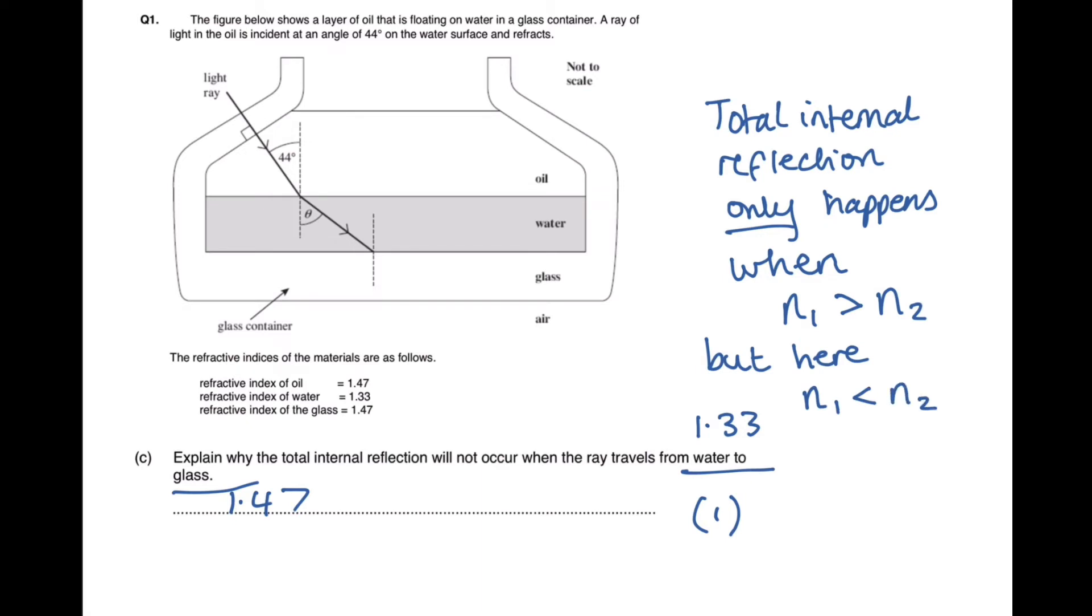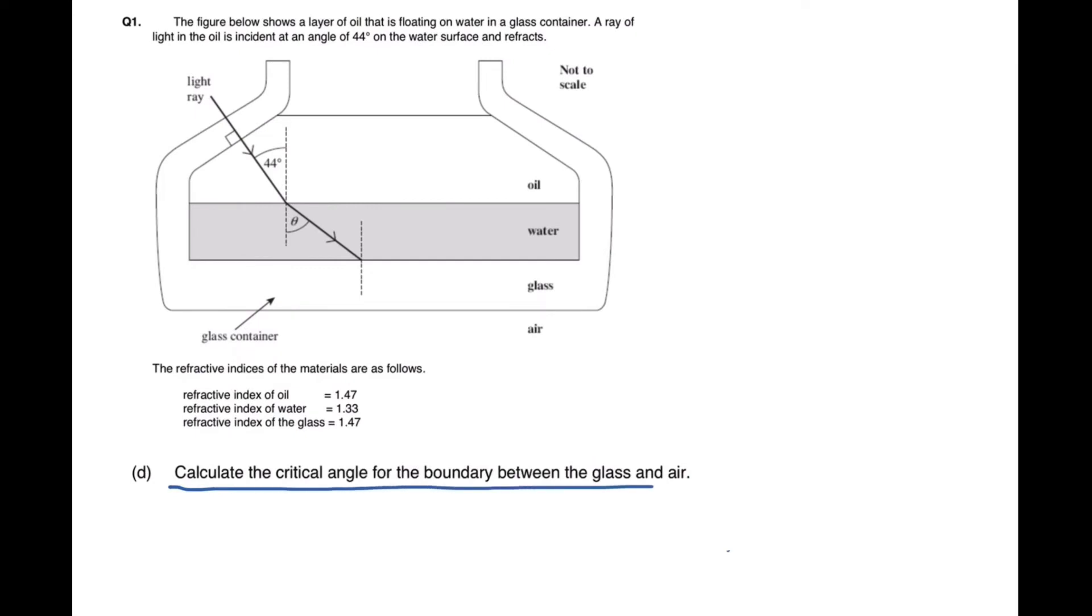The next part of this question is asking us to calculate the critical angle for the boundary between the glass and air. So in this case total internal reflection can happen because the refractive index of air is less than glass. To find this critical angle we need sine phi c is 1 over n. In this case n is the refractive index of the glass. So sine phi c is going to be equal to 1 over 1.47.